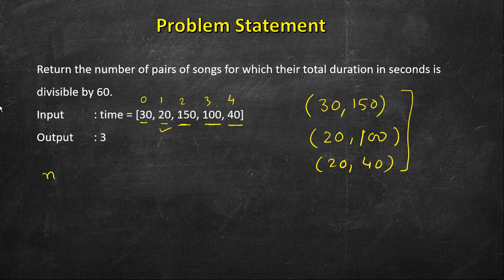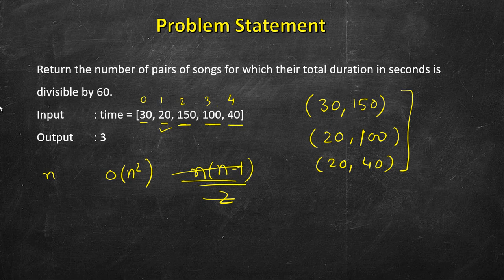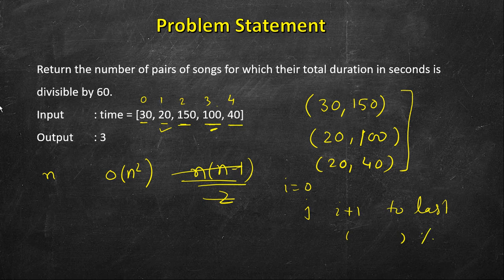One thing to note is that we have to return the number of pairs. In an array of length n, we have O(n²) pairs — n multiplied by n minus 1 divided by 2. We can use two loops: i from 0 to last minus 1, and j from i plus 1 to last, checking whether their sum modulo 60 is 0. But this takes O(n²) time — this is the naive exhaustive approach.